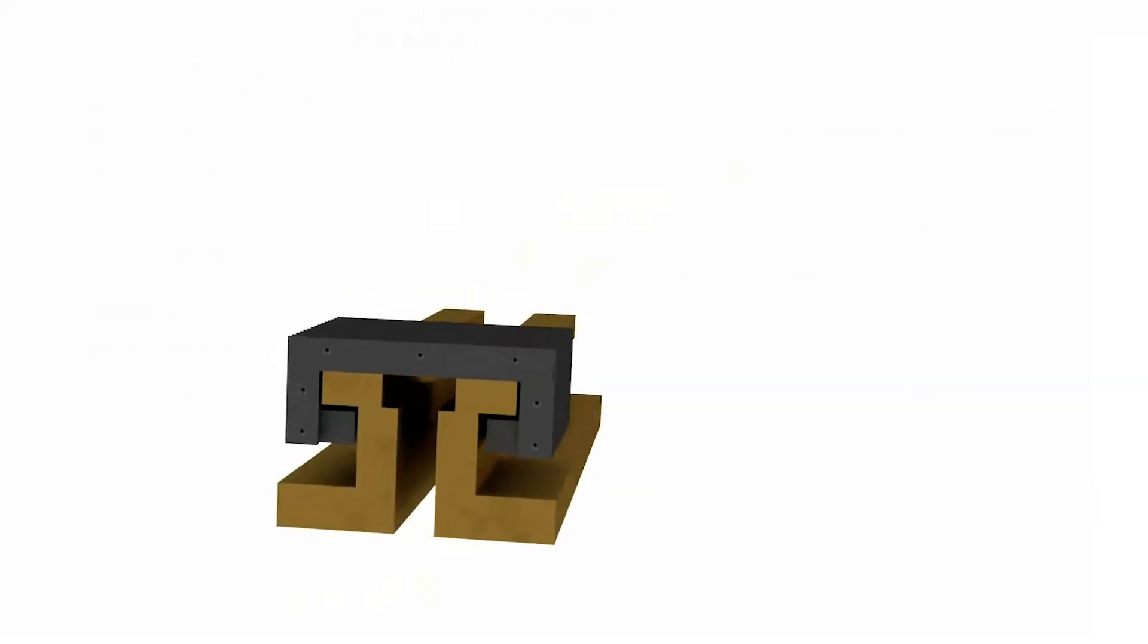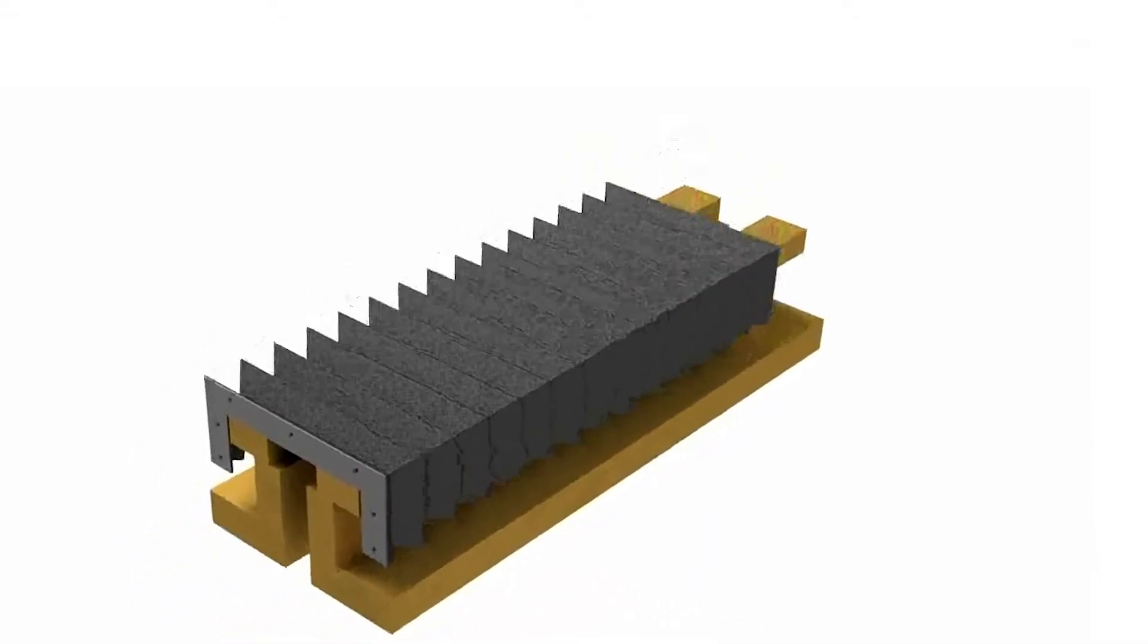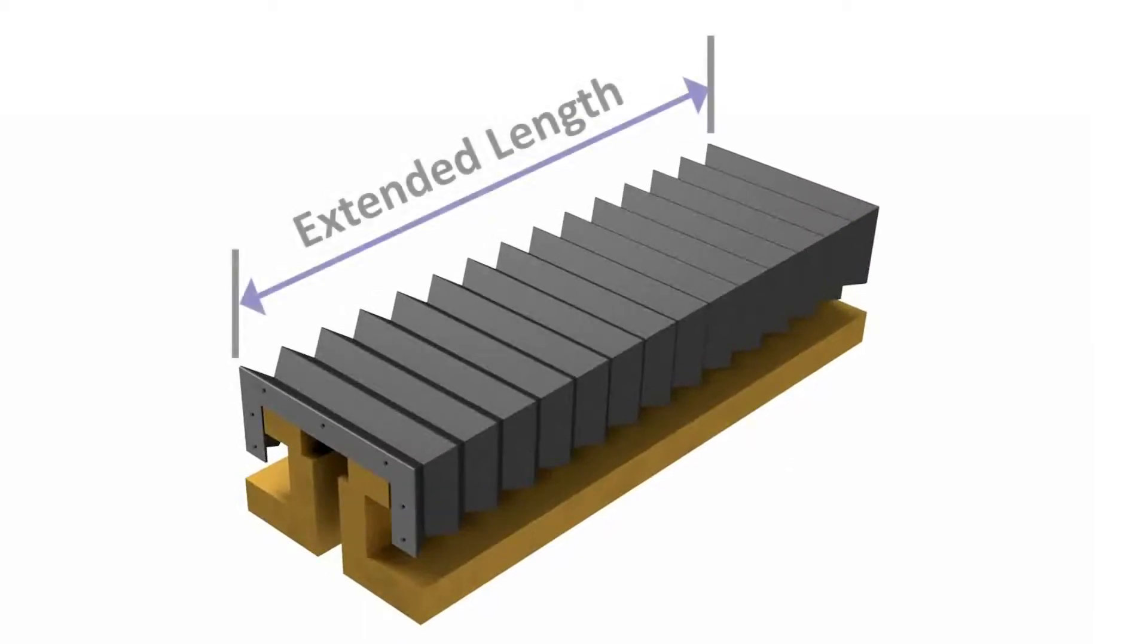Measure your exposed way length when the machine has traveled the maximum distance in one direction. The extended length is the maximum exposed distance between your two mounting surfaces.